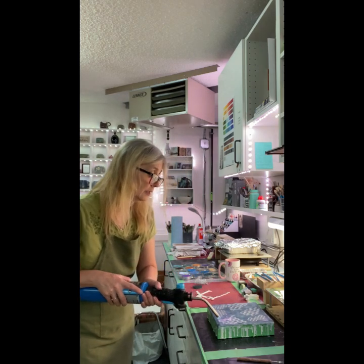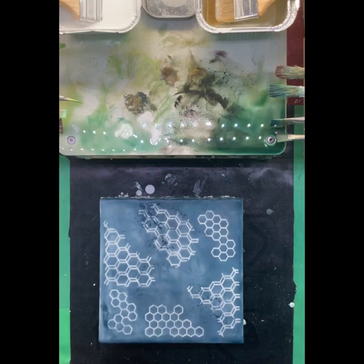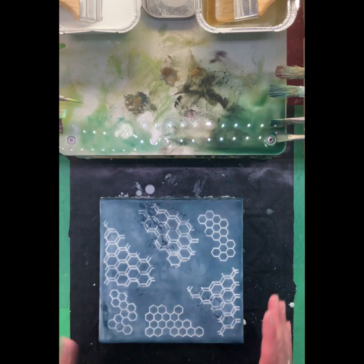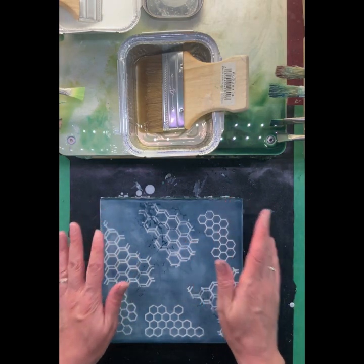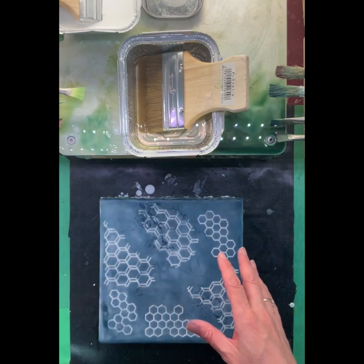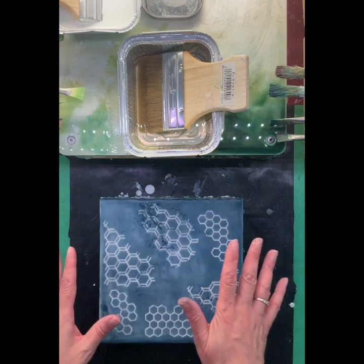And then once I am done this, I am going to apply a clear layer over top. Because I like to seal the pan pastel with a clear layer of medium so that it's not so fragile on the surface. So, I found when you apply wax over top of pan pastel, it's very easy to smear the pastel.